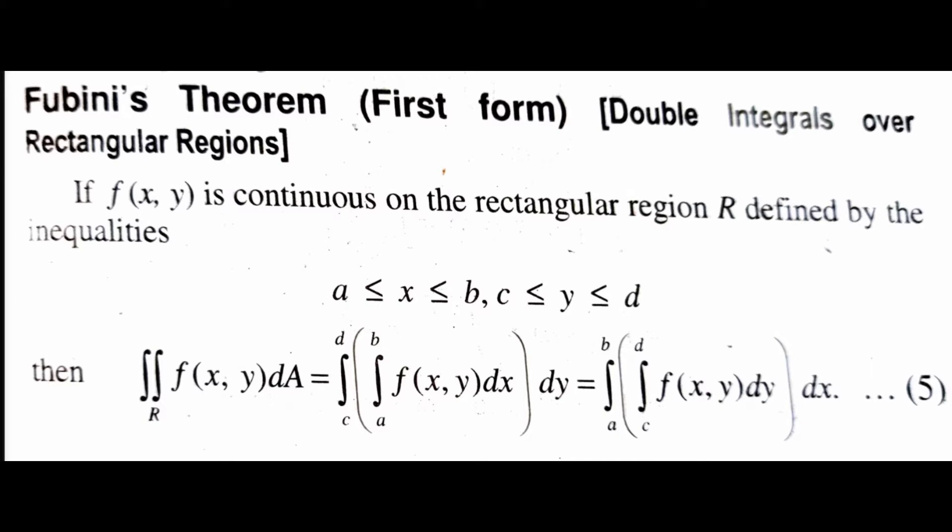If F(x,y) is continuous on the rectangular region R, defined by a ≤ x ≤ b and c ≤ y ≤ d, then the double integral over R of F(x,y) dA equals the iterated integral from c to d, a to b of F(x,y) dx dy. That can also be written as the integral from a to b, c to d of F(x,y) dy dx.